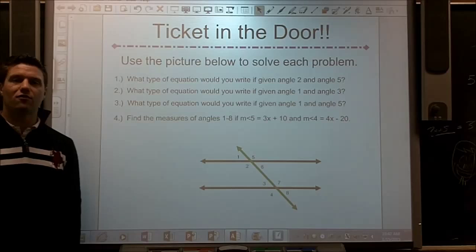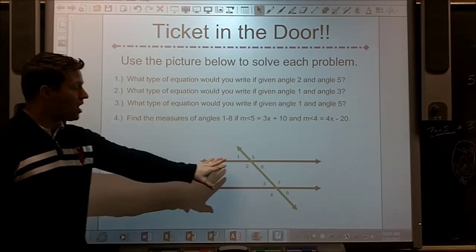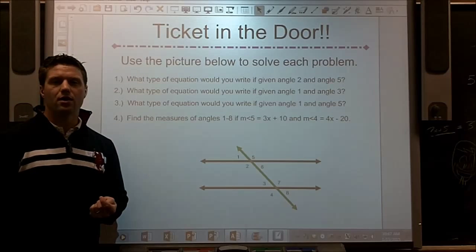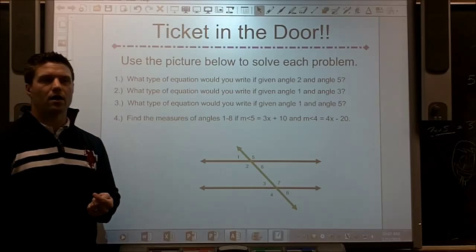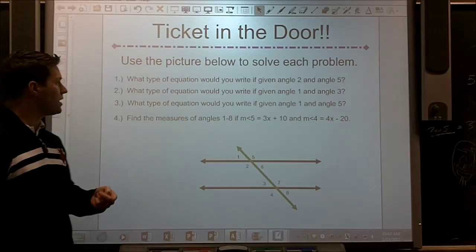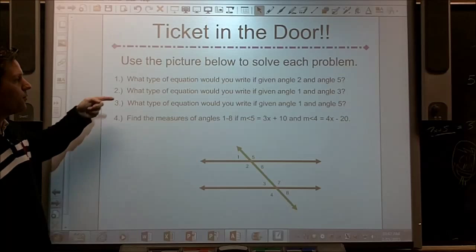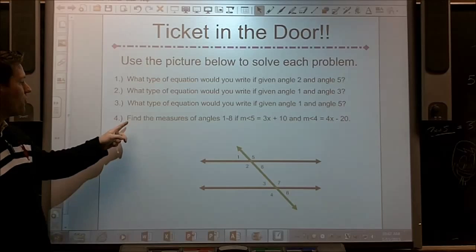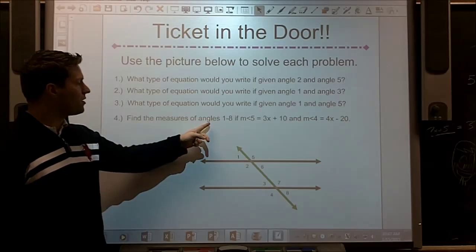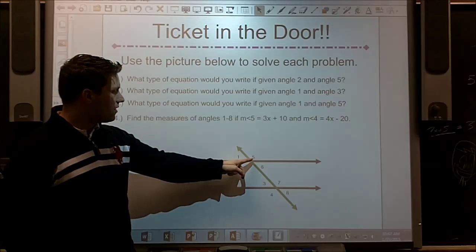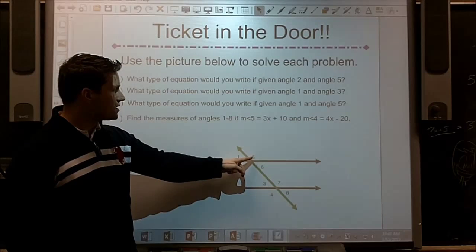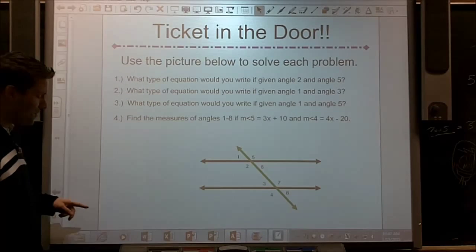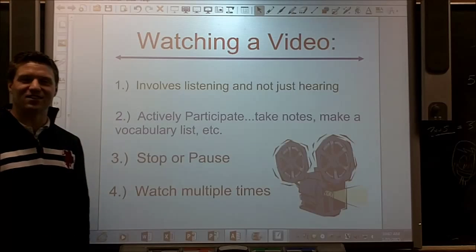All right. Here's your ticket in the door for next time. Use the picture below for all of them. What type of equation would you write? An equal equation, or would you write an equation that was equal to each other or equal to 180? If you were given 2 and 5, if you were given 1 and 3, if you were given 1 and 5, and then I have a problem here for you. Find the measure of angles 1 through 8 if you're given 5 is 3x plus 10, and 4 is 4x minus 20. Think about the equation you have to write for that and try to get all the rest of the angles there.